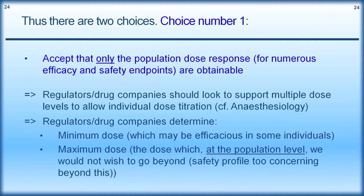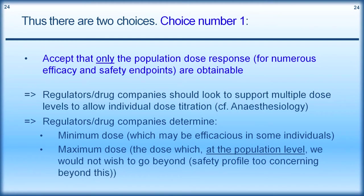We are different. Thus, there are two choices in drug development. Choice number one is that we accept that only the population dose response for numerous efficacy and safety endpoints are obtainable. Regulators and drug companies should look to support multiple dose levels to allow individual dose titration — just as with anesthetic agents, where the anesthetist titrates to effect. Regulators and drug companies need to determine a minimum dose, which may be efficacious in some individuals with an excellent safety profile, through to a maximum dose beyond which, at the population level, we would not wish to go.